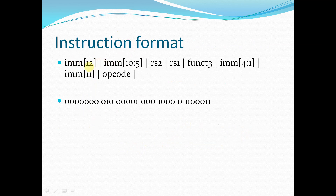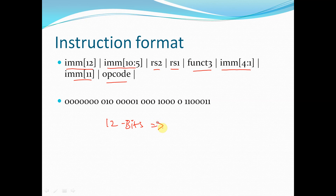Coming to the instruction format, this is the B-type instruction format where we have immediate value bit 12, immediate bit 11, immediate value bits 10 down to 5, RS2, RS1, funct3, immediate value bits 4 down to 1, and opcode. In total, 12 bits are provided for the immediate value, and we are not providing this immediate value all at once — we are dividing it across the instruction.